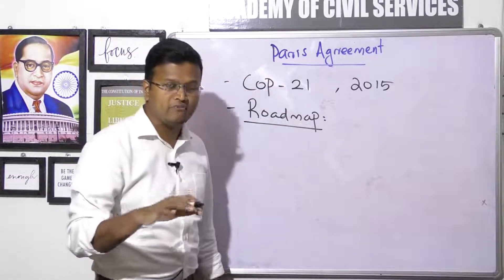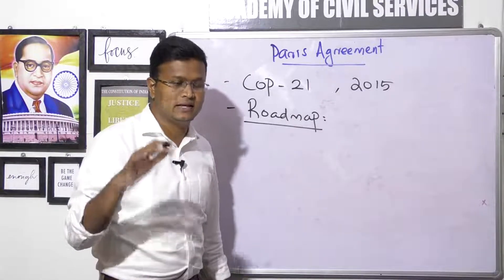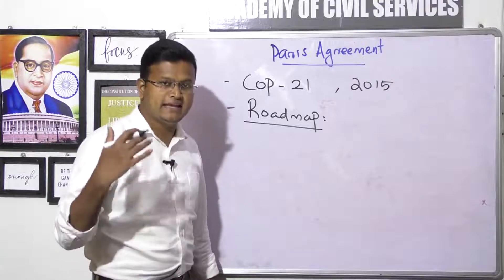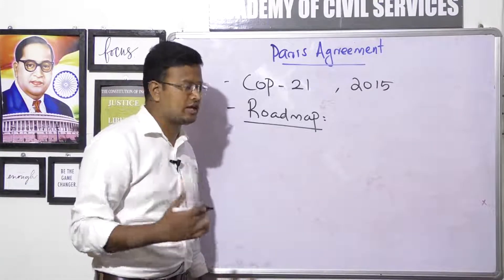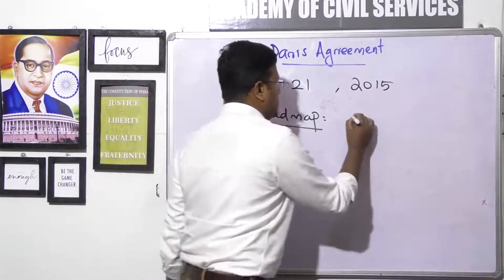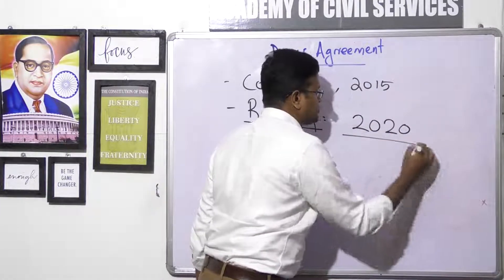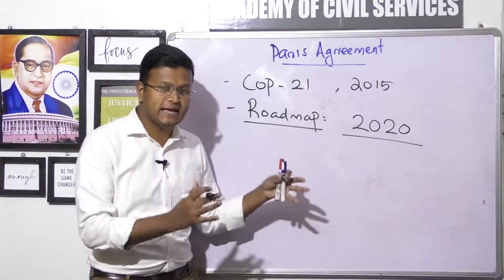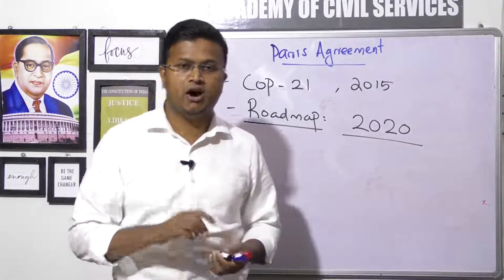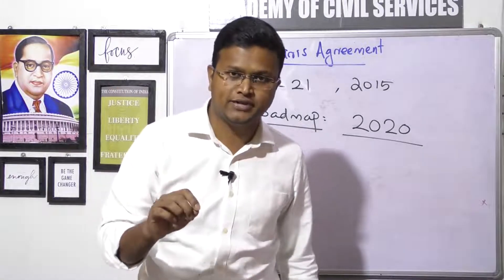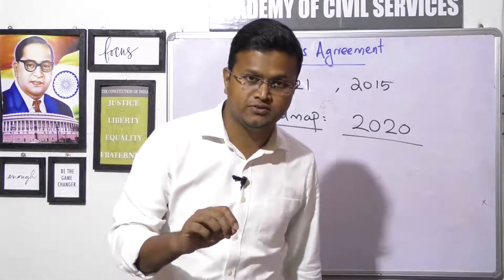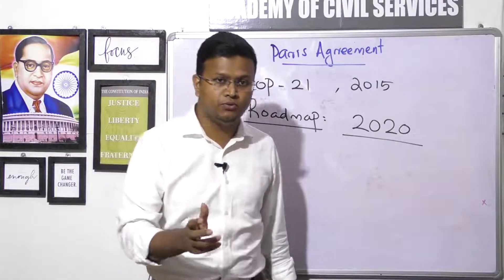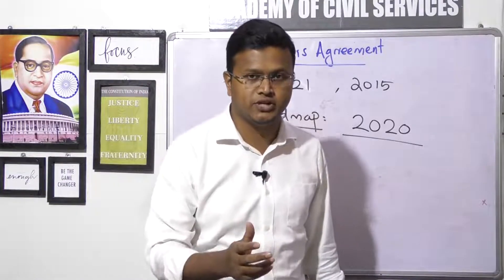In the COP 21 held in 2015 in Paris, the capital city of France, a roadmap was prepared for all nations to follow for controlling climate change in the world — what actions have to be taken. This roadmap, the Paris Agreement, would be followed by all nations post-2020 to ensure their initiatives and pledges for controlling climate change.